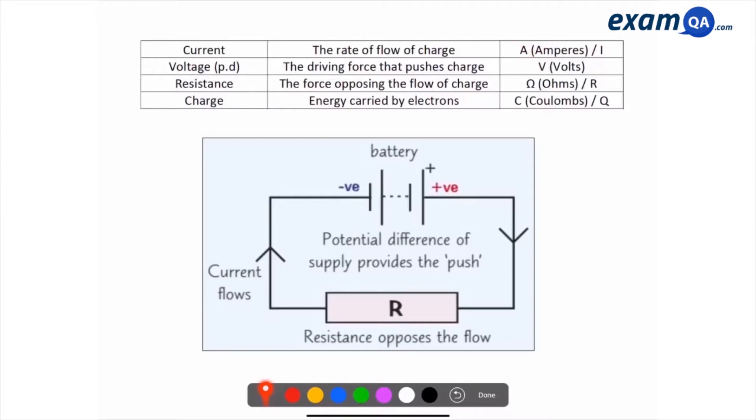You've got voltage, another word for voltage is potential difference. You've got resistance and charge. So all of these, make sure you know their definitions, quite straightforward, and their symbols. Charge is Coulombs, but the symbol is Q.